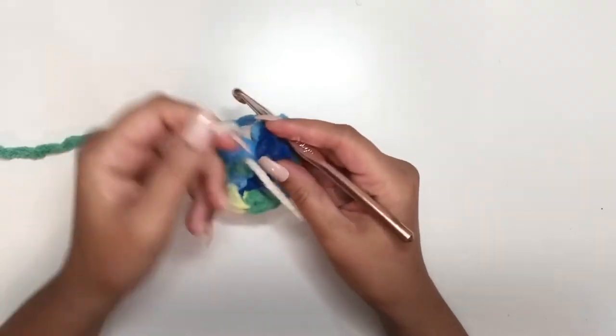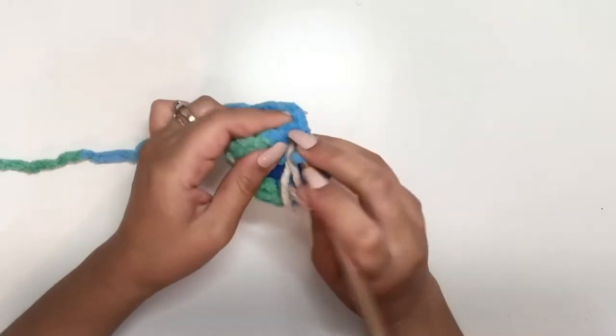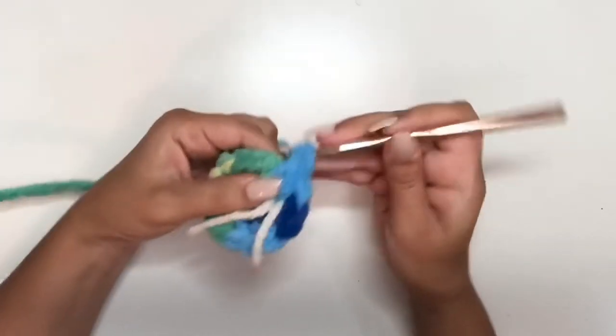Don't forget to mark your row. If you're using a strand of yarn like me, just take the back part of the yarn and just move it forward, marking the beginning of your row. So we'll do one single crochet into each stitch for a total of 14 single crochets in this row.